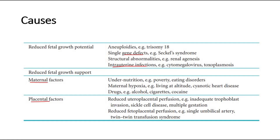Besides these maternal factors, in developed countries the most common cause of FGR is poor placental function, which can be secondary to inadequate trophoblast invasion of the spiral arteries. This results in reduced perfusion of the intervillous space, leading to abnormal development of the terminal villi and impaired transfer of oxygen and nutrients to the fetus. Reduced perfusion can also occur from other conditions such as maternal sickle cell disease and antiphospholipid syndrome.